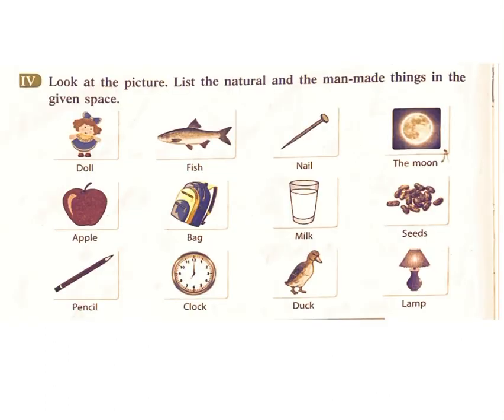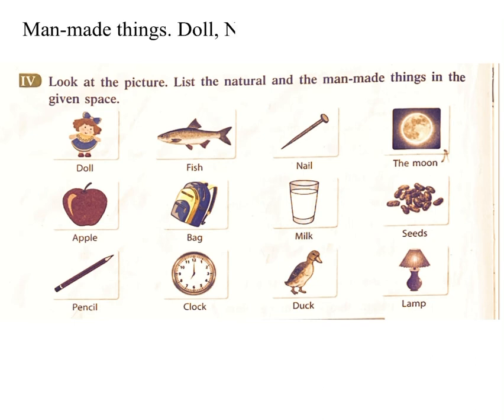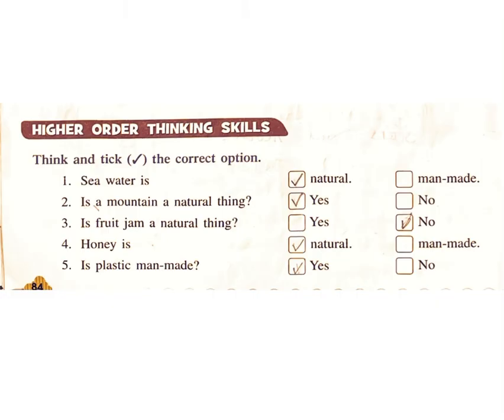Look at the picture. List the natural and the man-made things in the given space. Natural things: fish, the moon, apple, milk, seeds, duck. Man-made things: doll, nail, bag, pencil, clock, lamp.